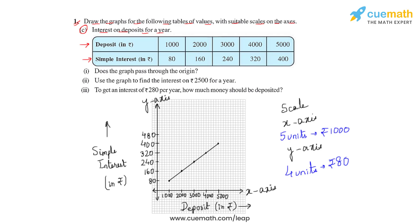Now let us answer the questions that follow. The first question asks whether the graph passes through the origin. If we extend this line, we'll see that this line passes through the origin. Hence, to answer the first question, yes, it passes through the origin.